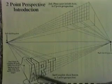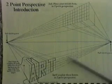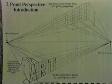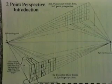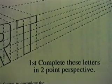In your example worksheet, I have laid out the word art. Notice I have all the guidelines going to the vanishing points. Also, note that it says complete these letters first. Do them in two-point perspective. That means you're going to do them using the right and the left-hand vanishing points.